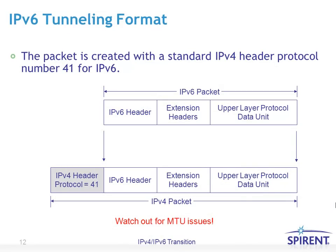This slide gives another example of the tunneling format. You start with the original IPv6 header, possibly any extension headers, and then the upper layer protocol. It gets encapsulated with an IPv4 header where the protocol field is set to 41, indicating that the next protocol header is an IPv6 header instead of TCP or UDP. Since we're adding another 20 bytes with the IPv4 header, you need to watch out for MTU — maximum transfer unit — issues.